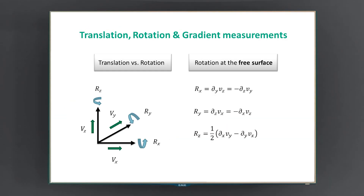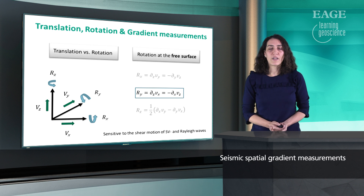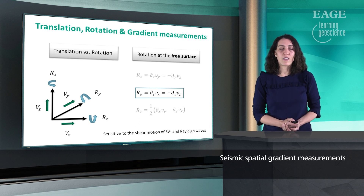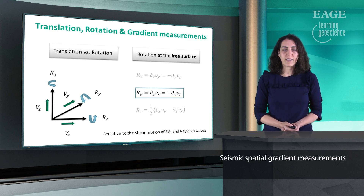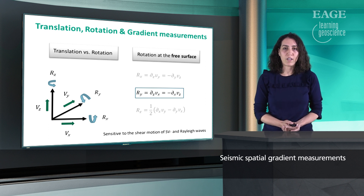However, most of our seismic experiments are conducted at the surface of the Earth, which means that the free surface boundary conditions are satisfied. Therefore, the rotation around the horizontal axes Rx and Ry are simplified, and it is sufficient to either measure those rotations, the horizontal gradient of the vertical component, or the vertical gradient of the horizontal component. In this lecture, we're interested in the rotation around the y-axis, because that's sensitive to the Rayleigh motion and to the vertically polarized shear waves.